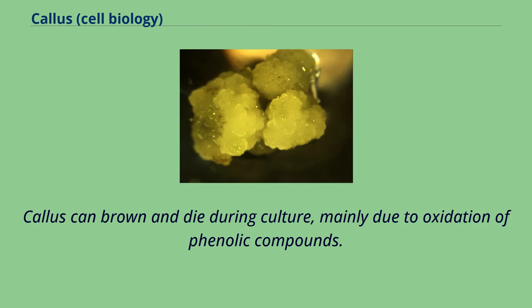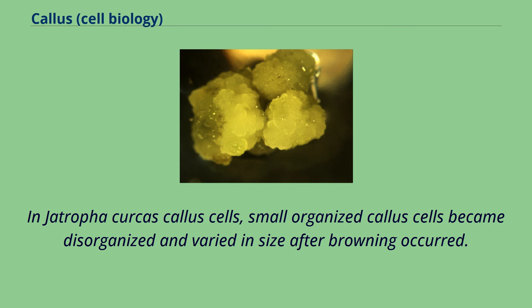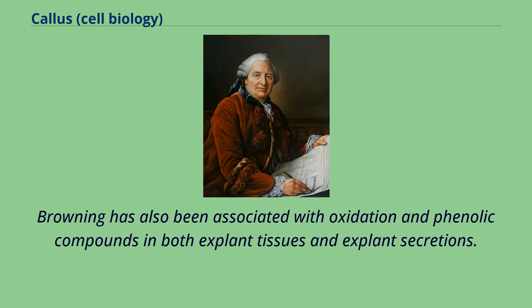Callus can brown and die during culture, mainly due to oxidation of phenolic compounds. In Jatropha curcas callus cells, small organized callus cells became disorganized and varied in size after browning occurred. Browning has also been associated with oxidation of phenolic compounds in both explant tissues and explant secretions.